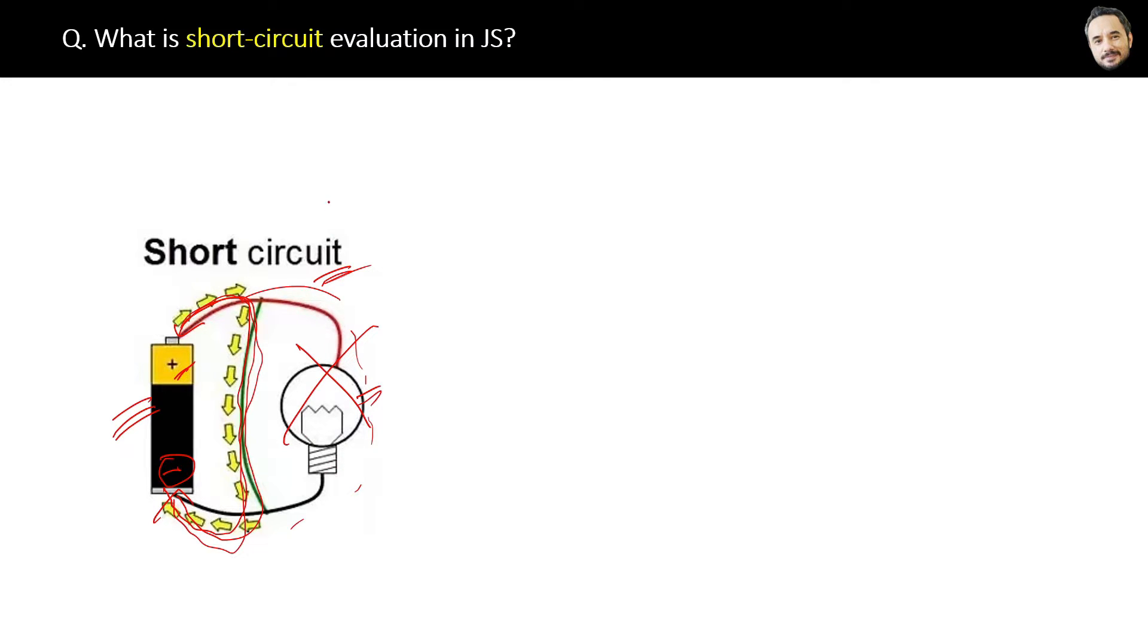So the whole circuit will not be completed because we now have a short circuit, a short way. Similarly in JavaScript, sometimes the whole operation will not be completed because of short circuits. Let's see the code.